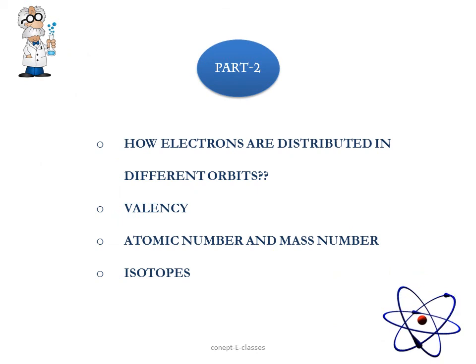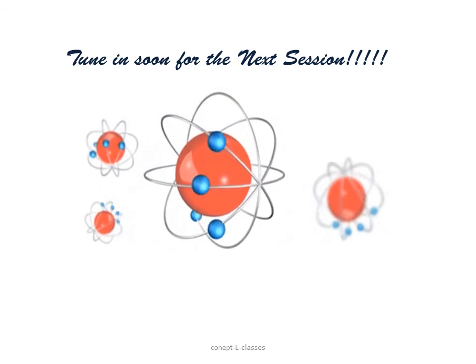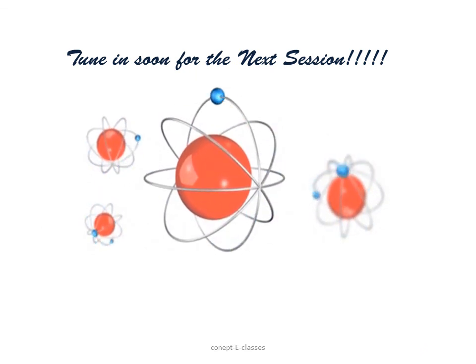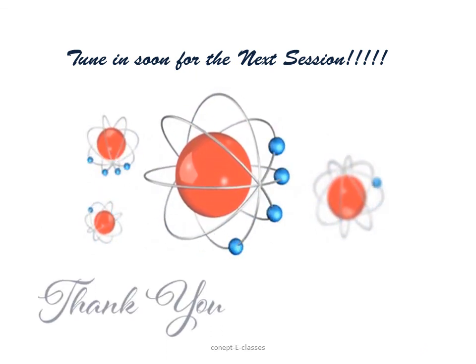So that's all for Part 1. In Part 2 we'll discuss how these electrons are distributed in the different shells or orbits. We'll also study about valency, then about atomic number and mass number, and finally about isotopes. So tune in soon for the next session. Till then, stay safe, take care, and may God bless you all. Thank you and bye bye.